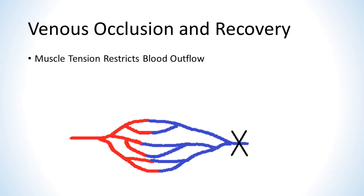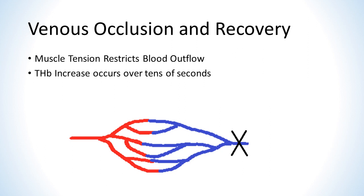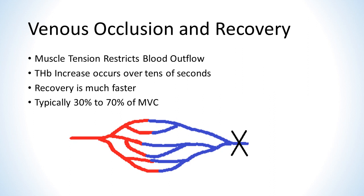A venous occlusion occurs when muscle tension becomes high enough to restrict blood outflow but still allows blood to flow into the muscle. In this case, THB increases slowly over tens of seconds to minutes as the muscle pumps up with blood. The recovery from a venous occlusion is much faster — when the muscle tension is released, the excess blood quickly leaves and THB returns to its level before the occlusion. Venous occlusions typically occur at around 30 to 70% of maximum voluntary contraction force, though there is wide variability.